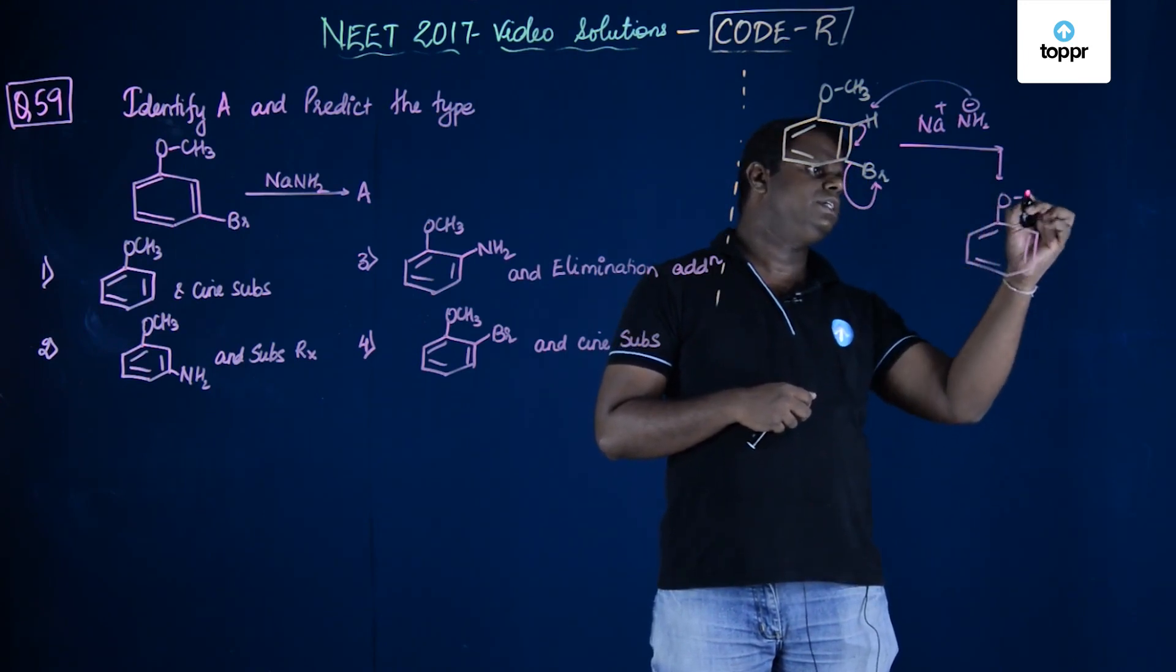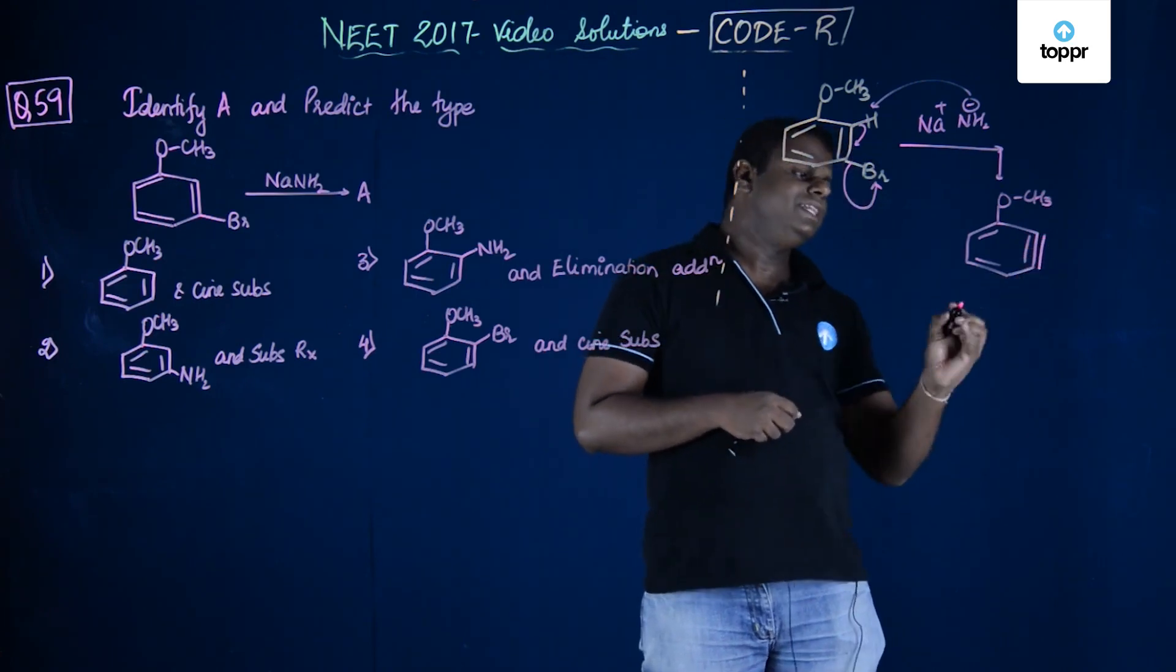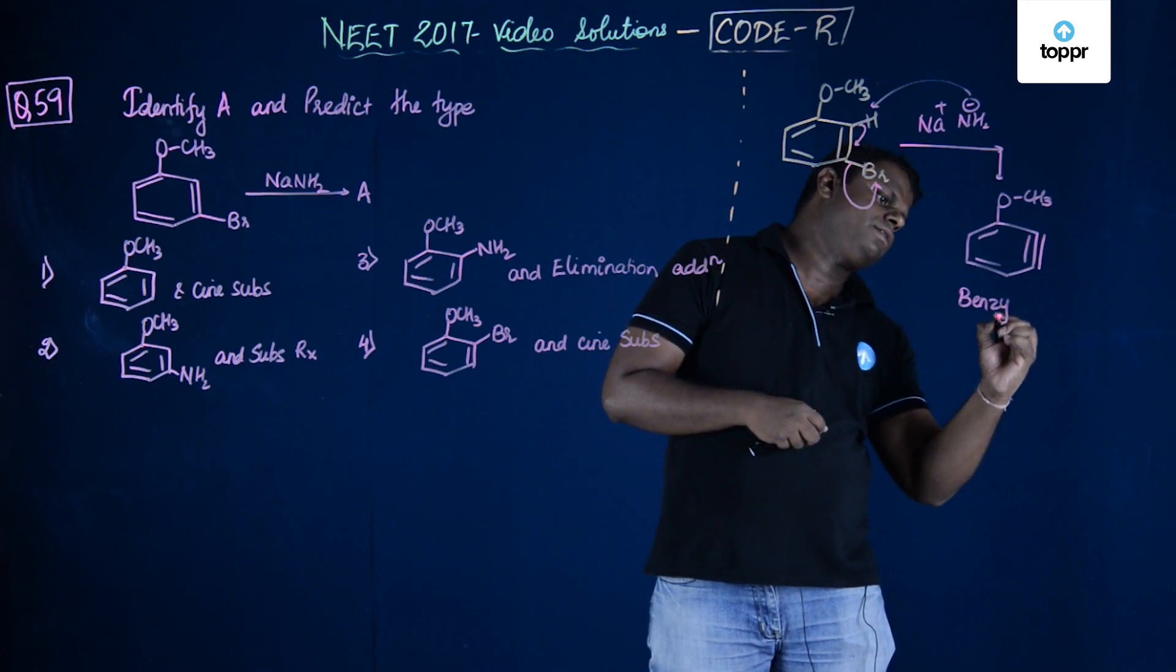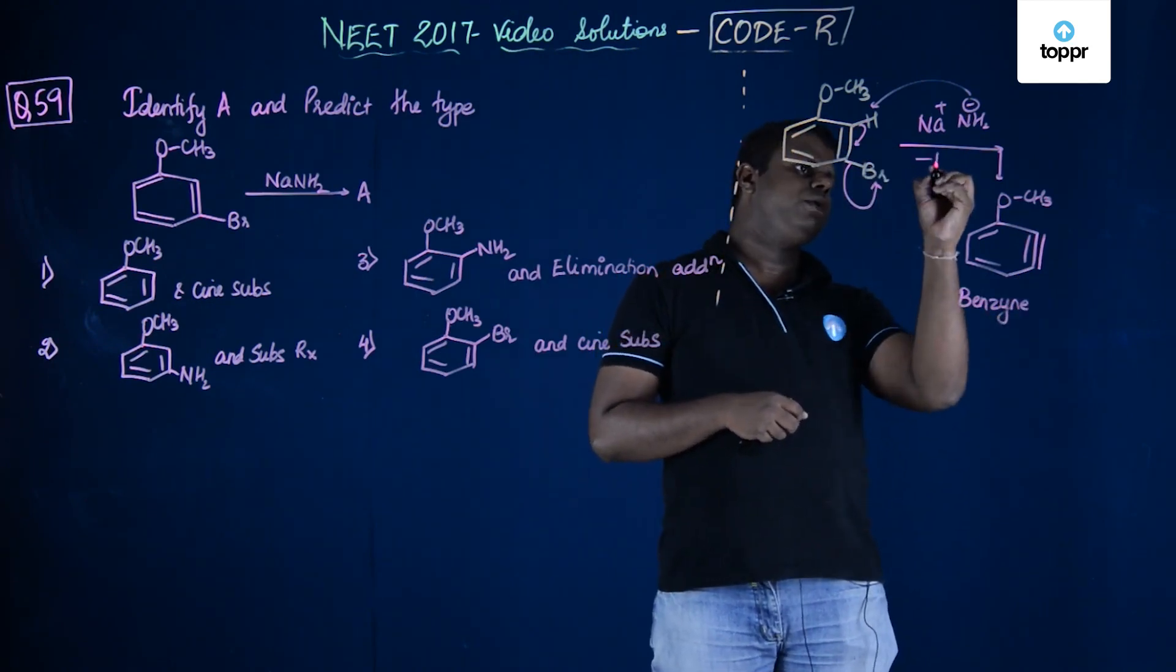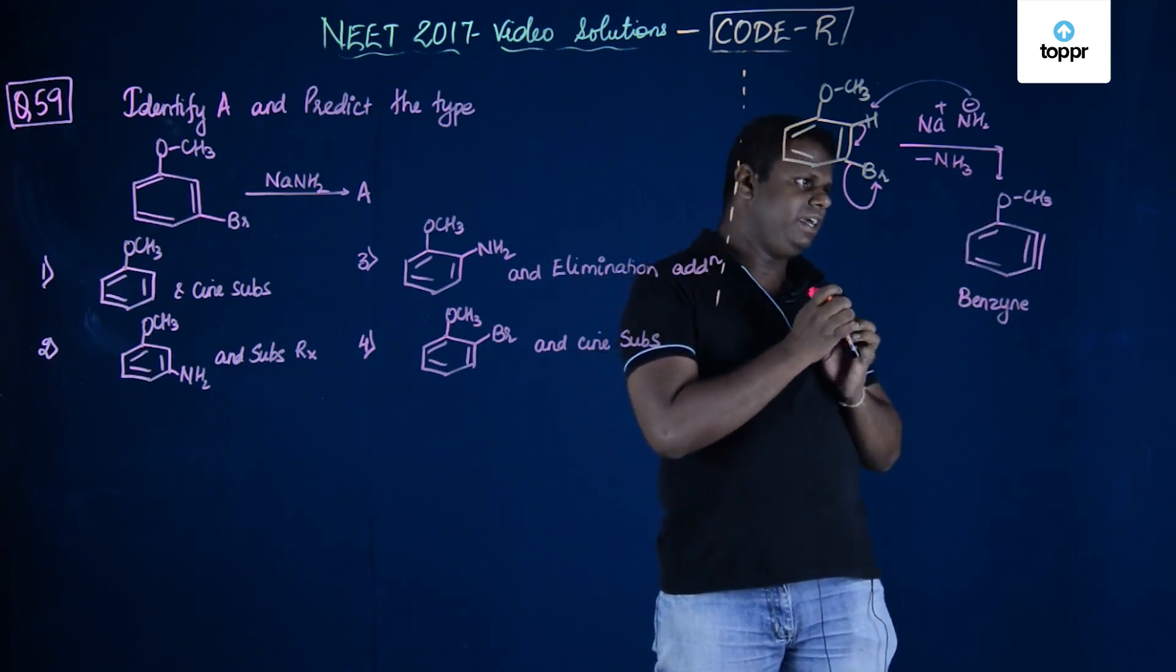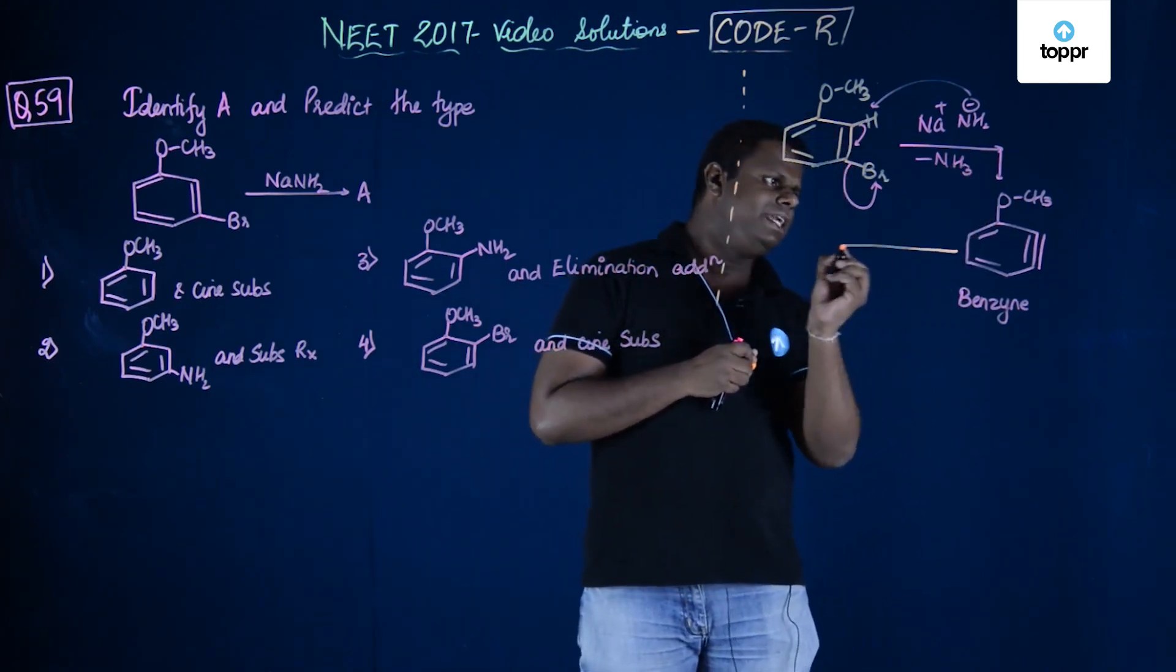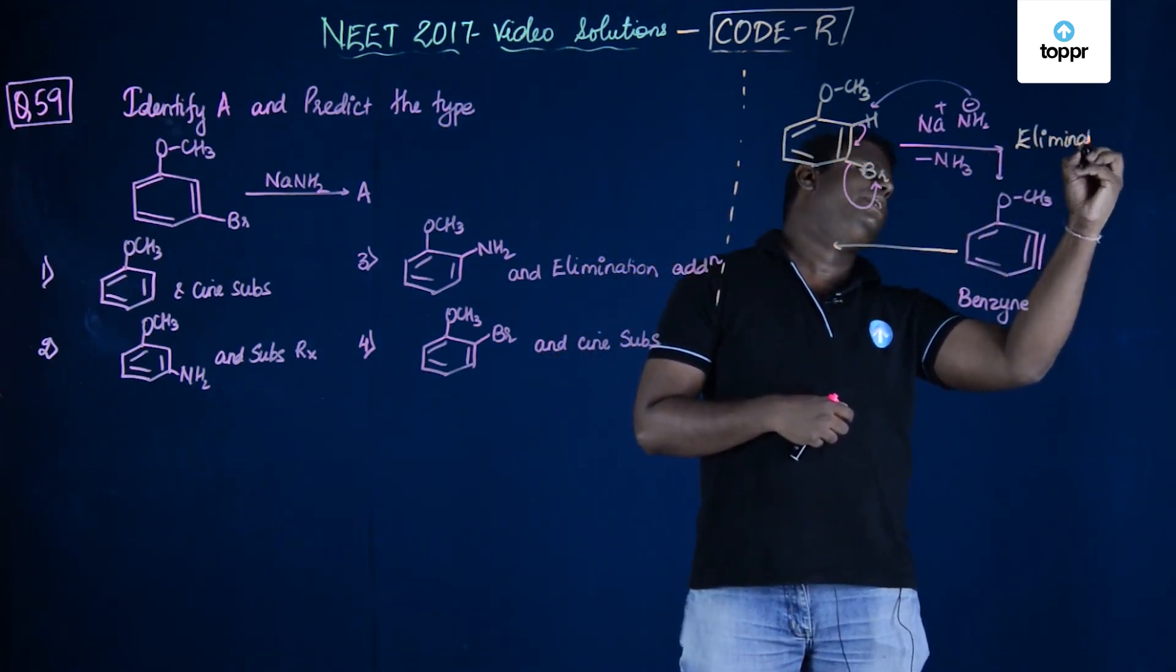If you could see here this is OCH3. Now, if I'm going to put a triple bond over here, this becomes a benzyne intermediate. This is basically benzyne intermediate and then I'm going to write minus NH3. This is a benzyne intermediate and then this benzyne intermediate - this is basically an elimination to form a benzyne intermediate.